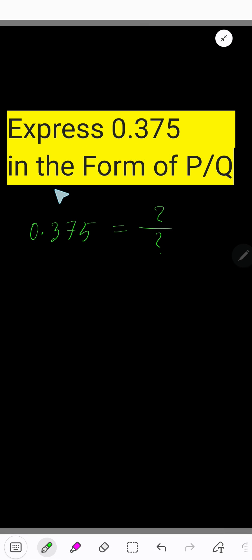Express 0.375 in the form of P by Q. That is, how to write 0.375 as a fraction. To convert this decimal to a fraction with a numerator and denominator, for the numerator just skip the decimal and write the number you are getting.